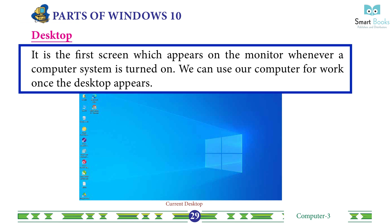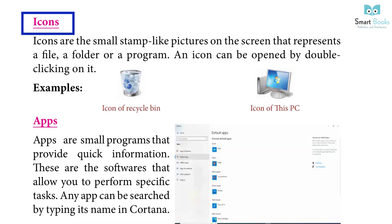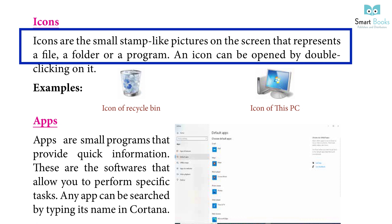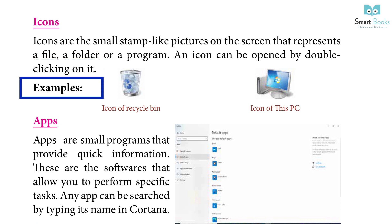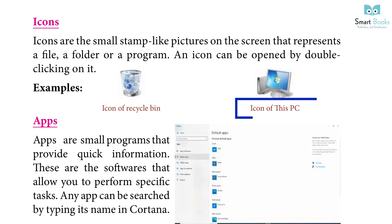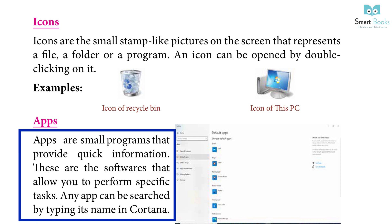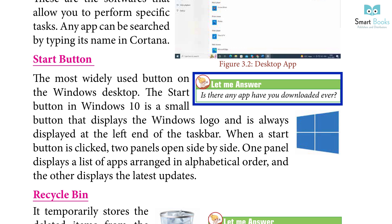Parts of Windows 10 Desktop: The desktop is the first screen which appears on the monitor whenever a computer system is turned on. Icons are the small stamp-like pictures on the screen that represent a file, a folder, or a program. An icon can be opened by double-clicking on it. Examples include the Recycle Bin icon and the My PC icon. Apps are small programs that provide quick information; they are softwares that allow you to perform specific tasks. Any app can be searched by typing its name in Cortana.